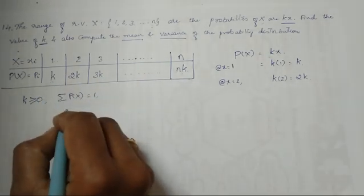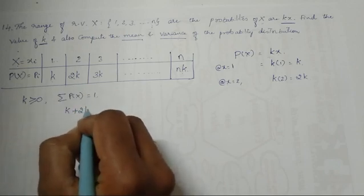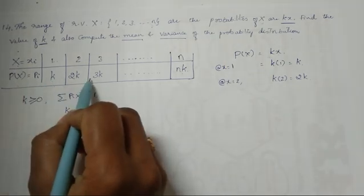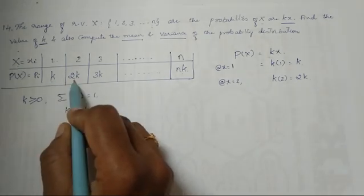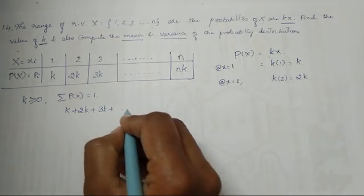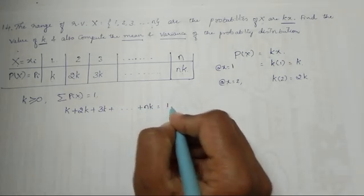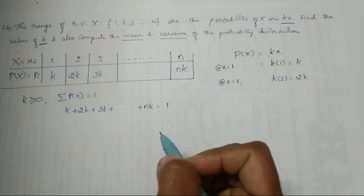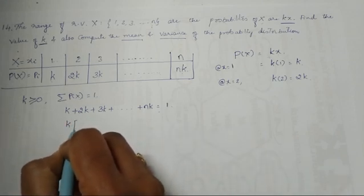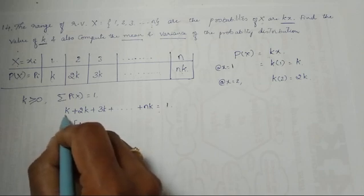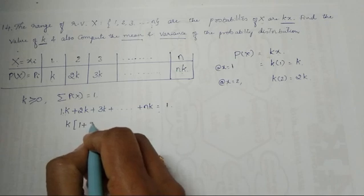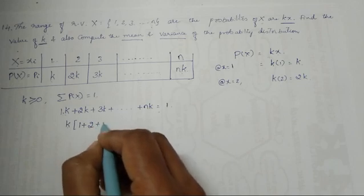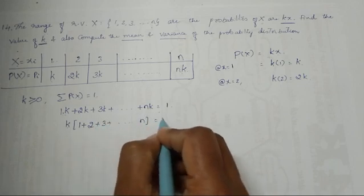Sum of p(x) is equal to 1. So these are the p(x) values; I will sum all of them. Sum of p(x) = k + 2k + 3k so on up to nk, and this must be equal to 1. From this equation, we can take k as common. If I take k as common, I remain with 1 + 2 + 3 so on up to n, which equals 1.